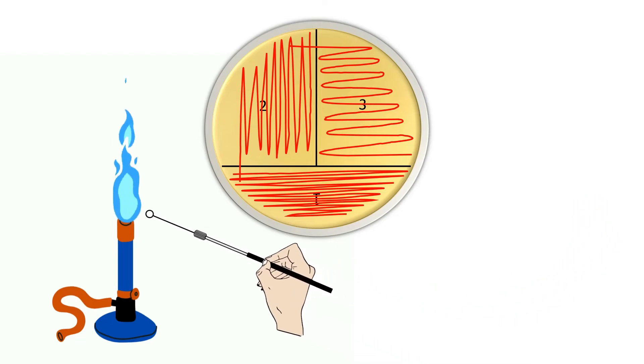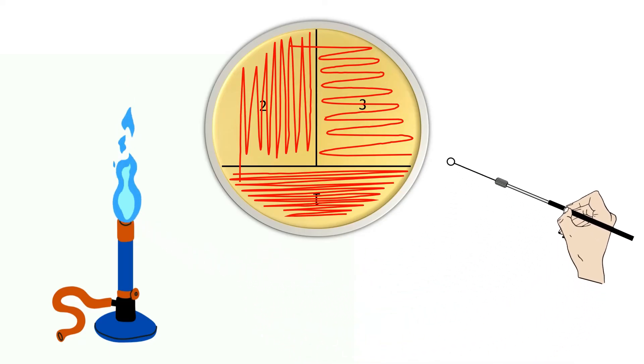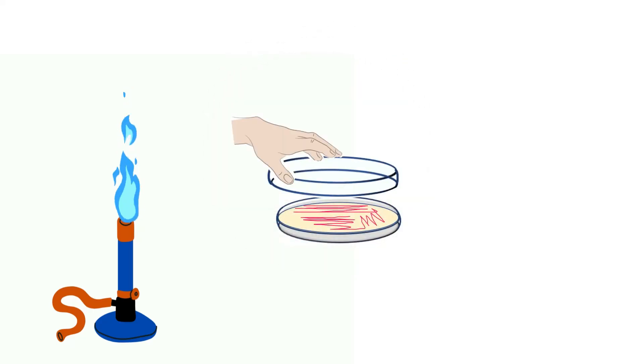Finally heat the wire loop and keep it aside. Now close the lid of the petri plate.